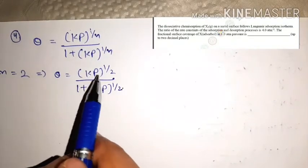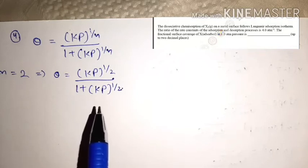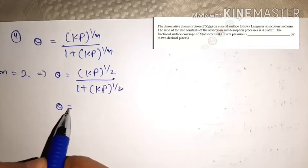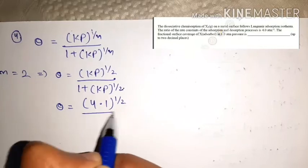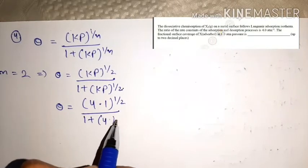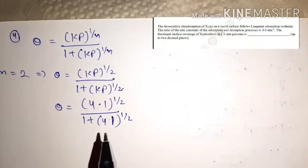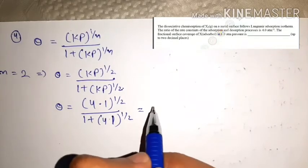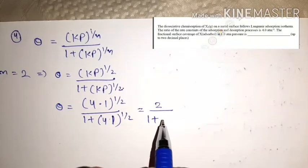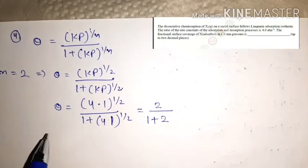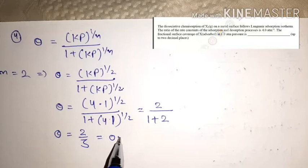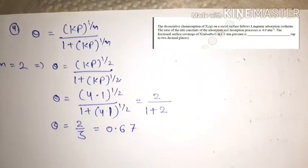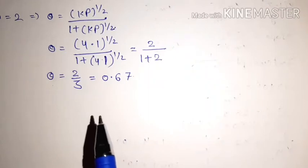Substituting values: K = 4 per atm and p = 1 atm. So θ = (4×1)^(1/2) / (1 + (4×1)^(1/2)) = 4^(1/2) / (1 + 4^(1/2)) = 2 / (1 + 2) = 2/3 = 0.67. The fractional surface coverage θ = 0.67.